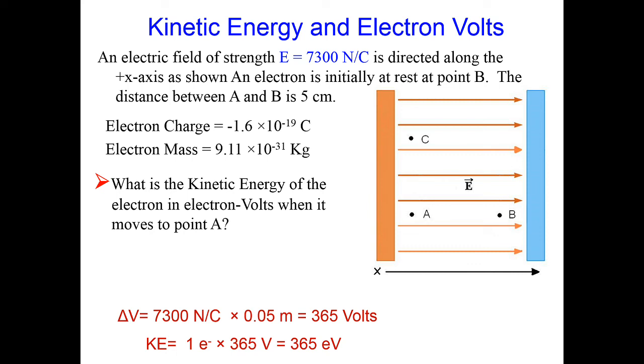So this is much easier to keep track of. If you wanted to find the value in joules, you could then take the 365 electron volts and multiply it by 1.6 times 10 to the minus 19 joules per electron volt, and that will give you 5.84 times 10 to the minus 17 joules.